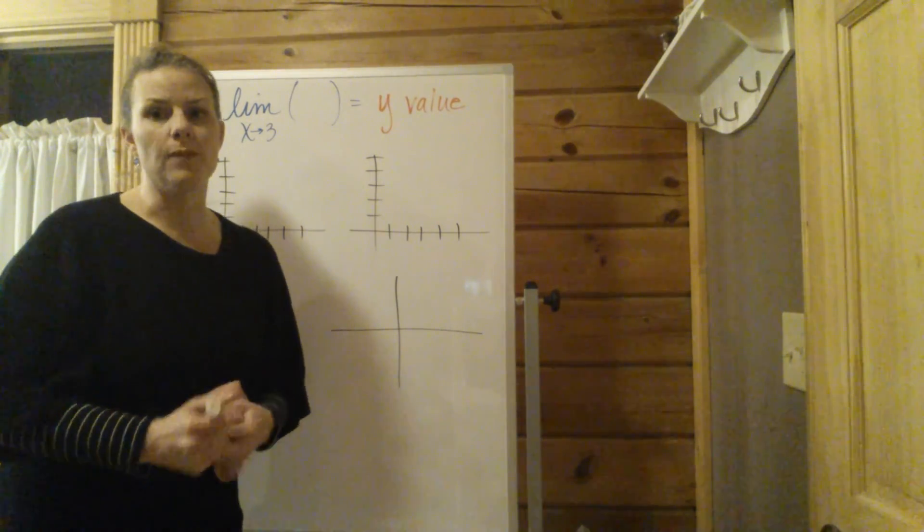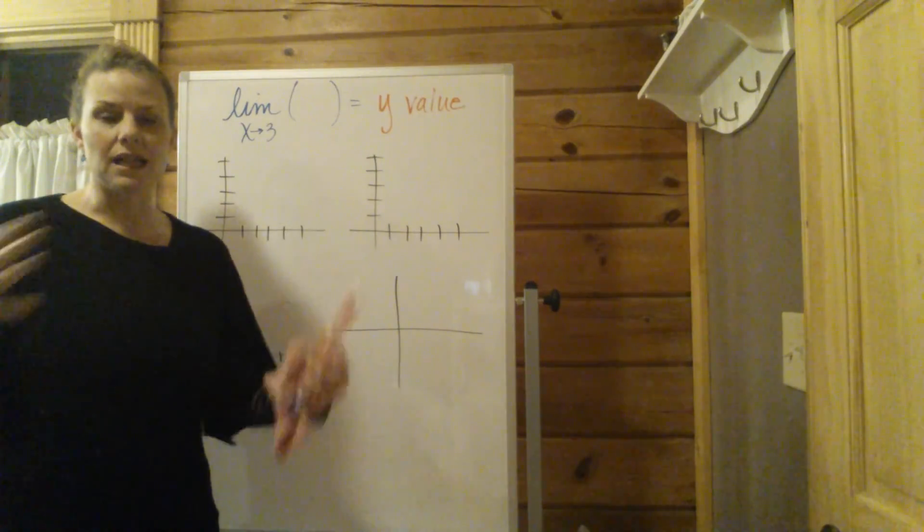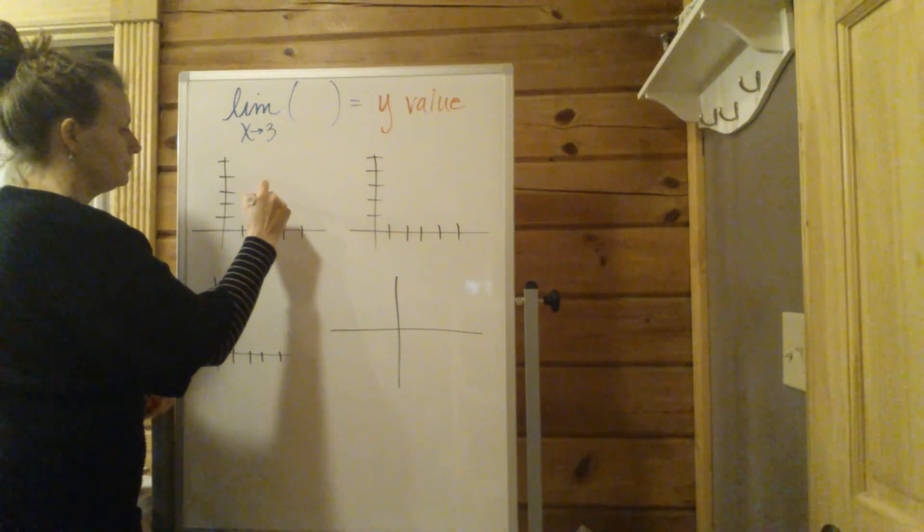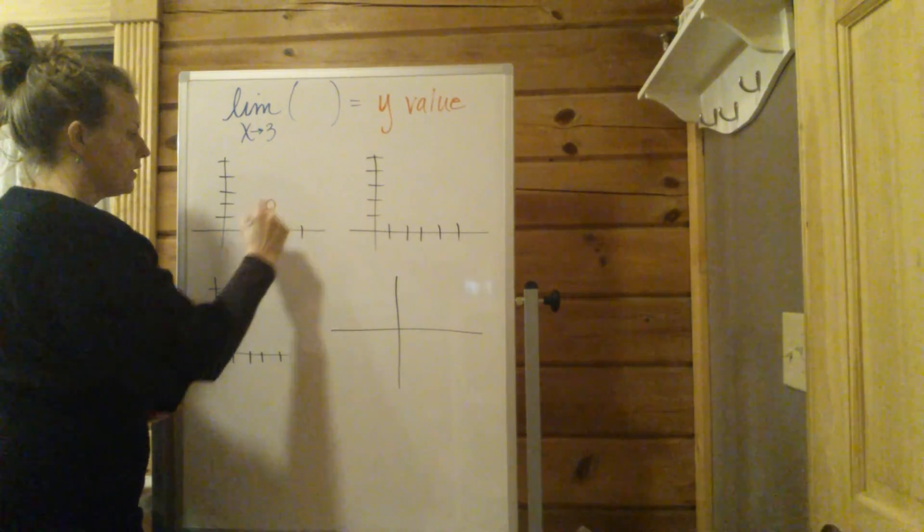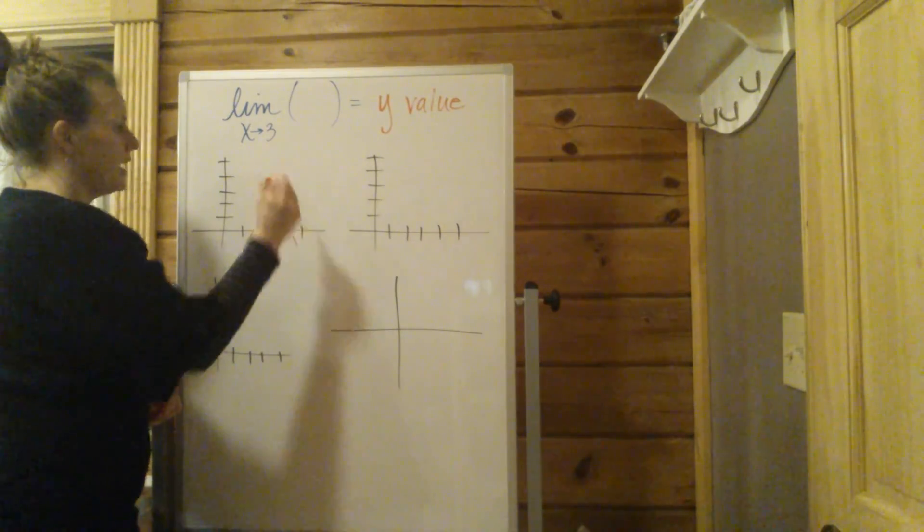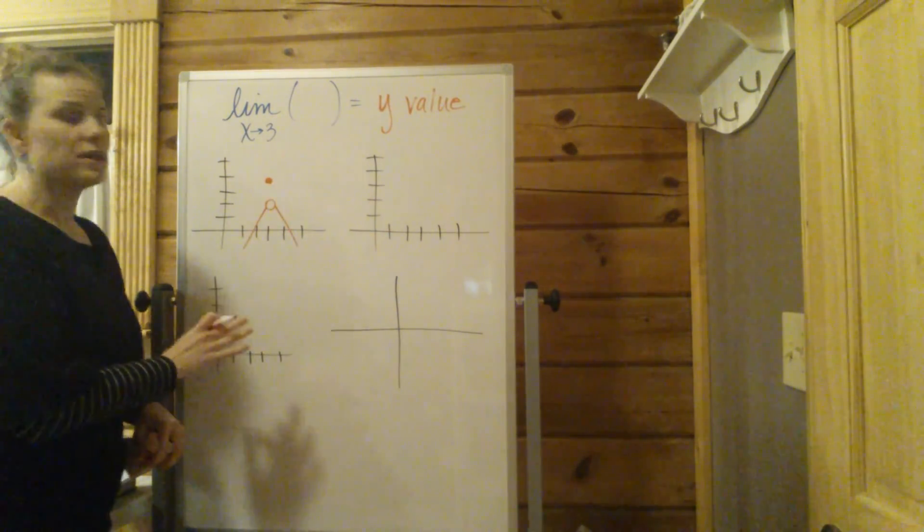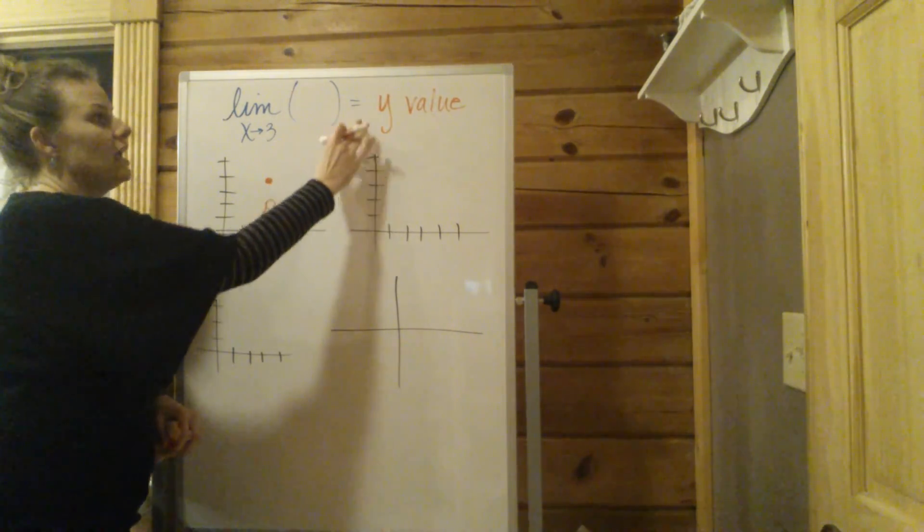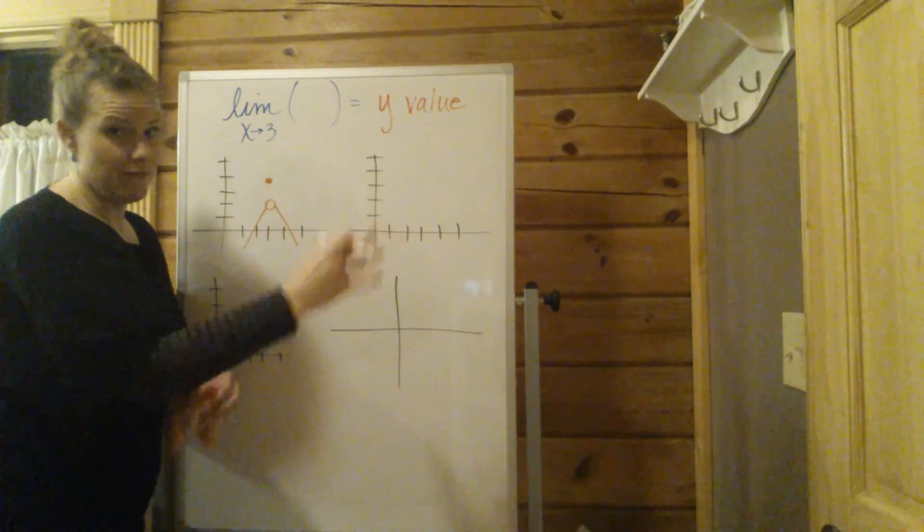The classic example illustrating what a limit is: we had a graph like this and then a point like this. We're talking about the limit as x approaches 3 of some function, and that is always going to equal a y value.